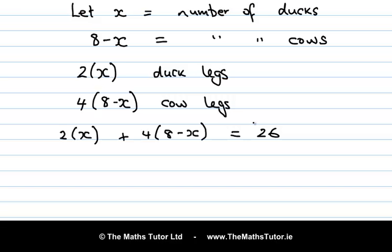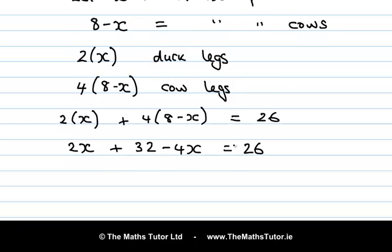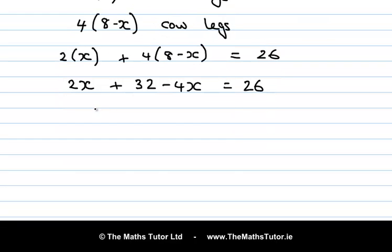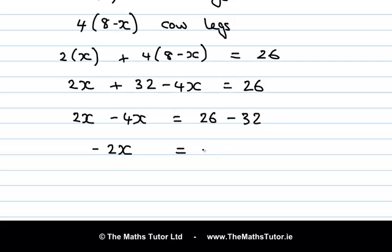Now we have a linear equation with the variable x and all we need to do is solve it. Expanding: 2 times x is 2x, plus 4 times 8 is 32, and 4 times minus x is minus 4x, that is equal to 26. Grouping like terms: 2x minus 4x equals 26 minus 32. 2x minus 4x is minus 2x, that is equal to minus 6.